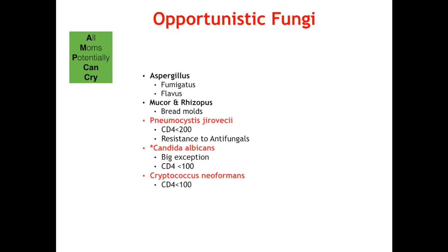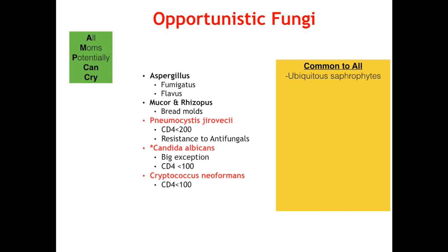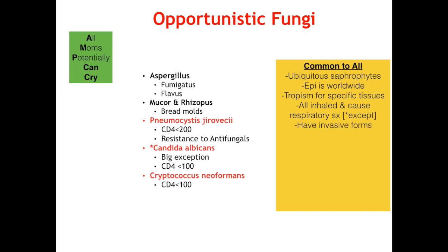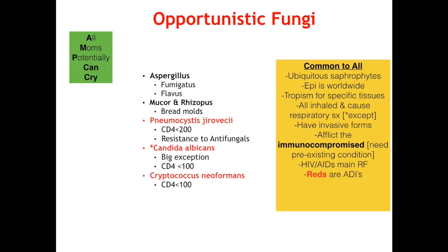Now let's go over what they all have in common. They are all ubiquitous saprophytes. They all have nonspecific epidemiology and are found worldwide. They all have a tropism for specific tissues that they like to infect. They are all inhaled and primarily cause respiratory symptoms except Candida. These are opportunists so they have invasive forms and only afflict the immunocompromised, with HIV/AIDS being the main risk factor. The ones colored in red are AIDS-defining illnesses. And finally, all can be treated with azoles or amphotericin except jirovecii.